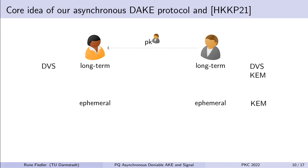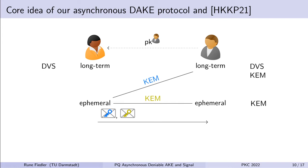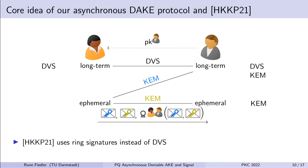Now that we have a tool for deniable authentication, let's look at the core idea of our asynchronous deniable authenticated key exchange protocol. Both Alice and Bob have a DVS key in their long-term key, and Bob also has a KEM key in his long-term key and ephemeral key. Bob transfers his public key to Alice. Alice encapsulates against Bob's long-term KEM key and against Bob's ephemeral KEM key, resulting in two different KEM ciphertexts. Next, Alice signs these two KEM ciphertexts with a DVS scheme, resulting in an Alice-to-Bob signature. With this, we have Alice-to-Bob authentication while retaining deniability for Alice. Hashimoto et al. use the same principle in their protocol but with a ring signature instead of a DVS scheme.